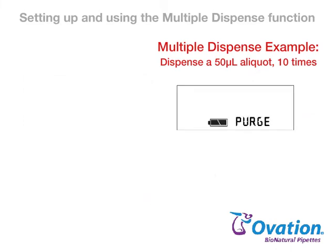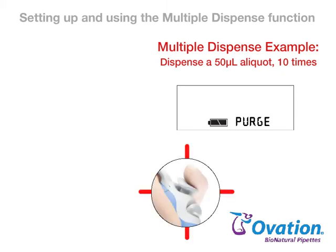After the final volume is dispensed, Purge appears on the display. Press and release the pipetting trigger to discard any remaining liquid in the tips. Purge can also be used at any time to end a liquid handling function by simply pressing the center button followed by the pipetting trigger.